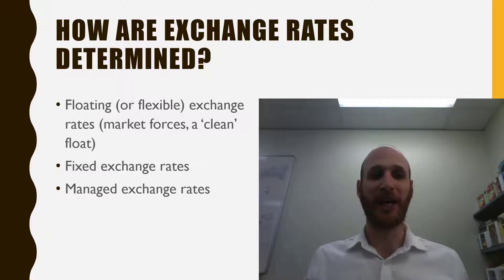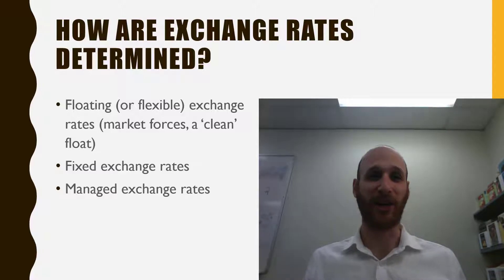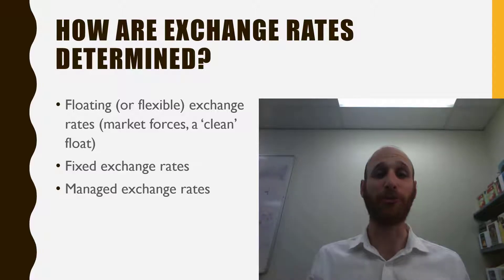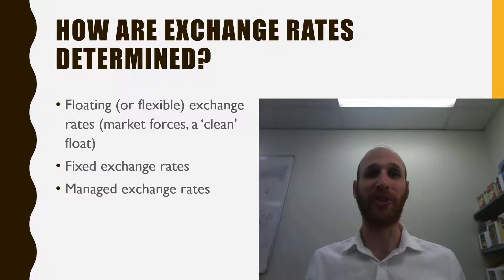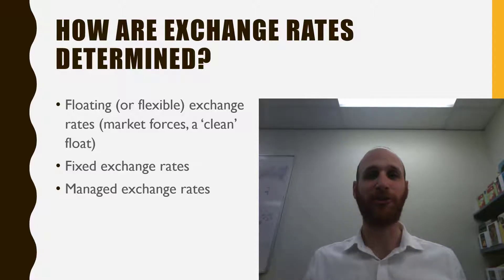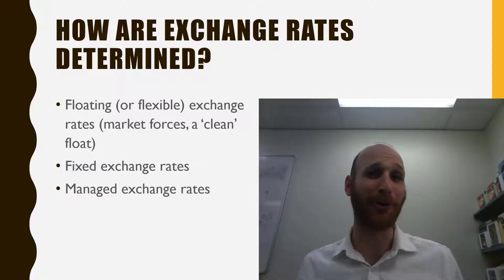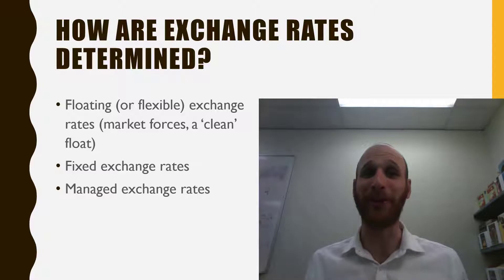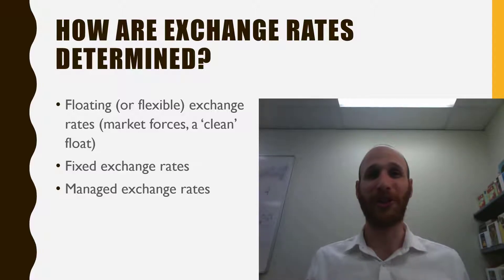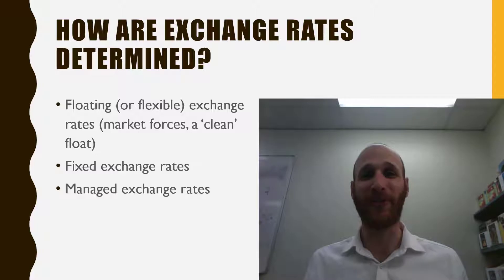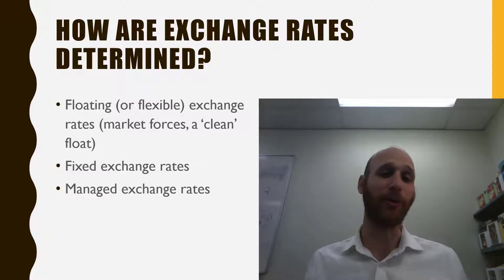The second type is a fixed exchange rate, where the value of a currency is fixed and the government or central bank tries to support and keep the currency at that level. The third type is a little bit like a Hannah Montana style approach — the best of both worlds — so we've got a floating exchange rate most of the time, with some intervention to keep it a little higher or bring it a little lower.